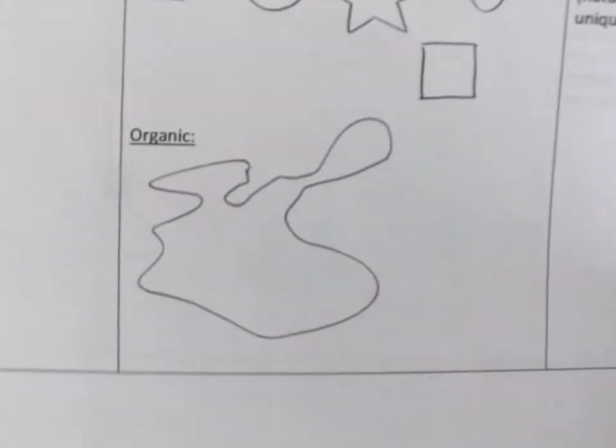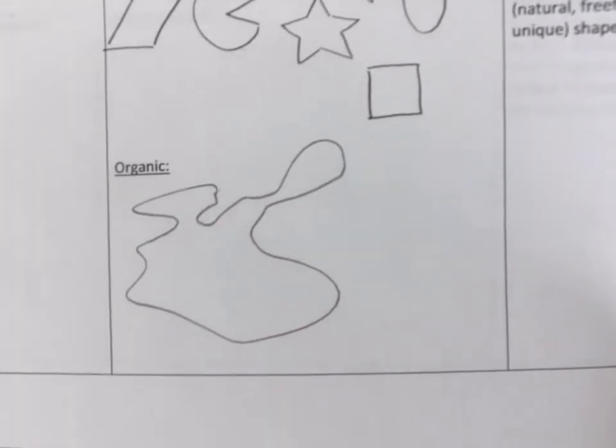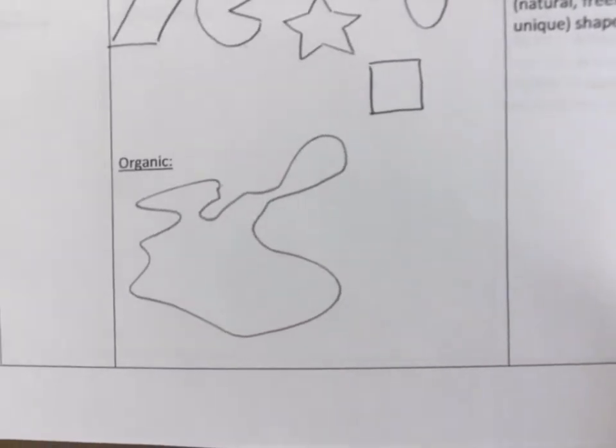This is an organic shape, super unique. It's an area that has an outline to it. The line has reconnected. It's 2D. It counts as a shape, according to definition. But it's a really interesting, unique, free-flowing shape that often isn't reproduced or universally known.